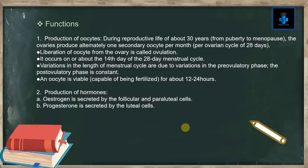The oocyte is viable, that is it is capable of being fertilized, for about 12 to 24 hours. Number two, production of hormones: estrogen is secreted by the follicular and paraluteal cells, whereas progesterone is a hormone secreted by the luteal cells.